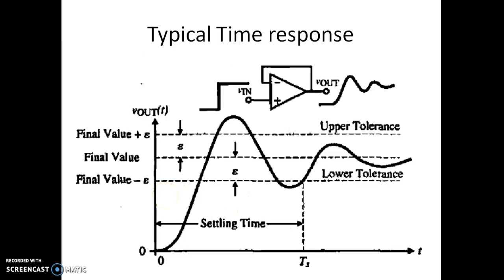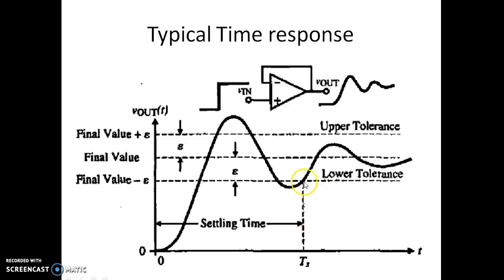This is the typical time domain response of an op-amp configured as a voltage follower. The input is a step, but the output is not an exact step — it rings and settles down, showing a second-order response due to two dominant complex poles. This results in oscillations that eventually settle. The settling time is when the response stays within a tolerable limit band. Until that time, the response has not settled down.